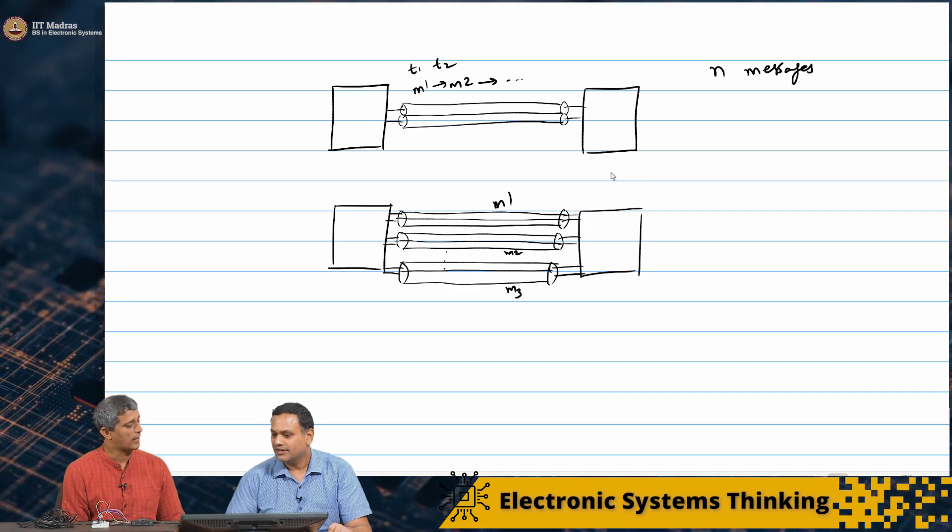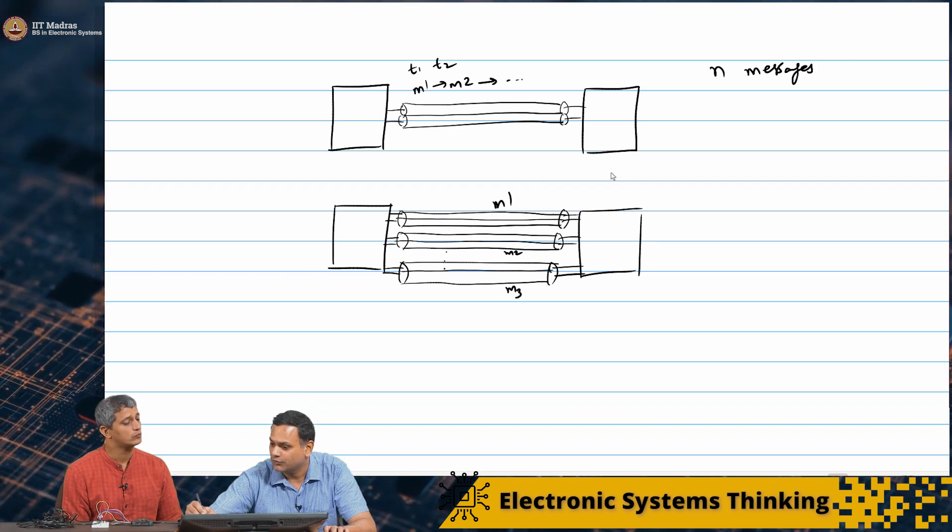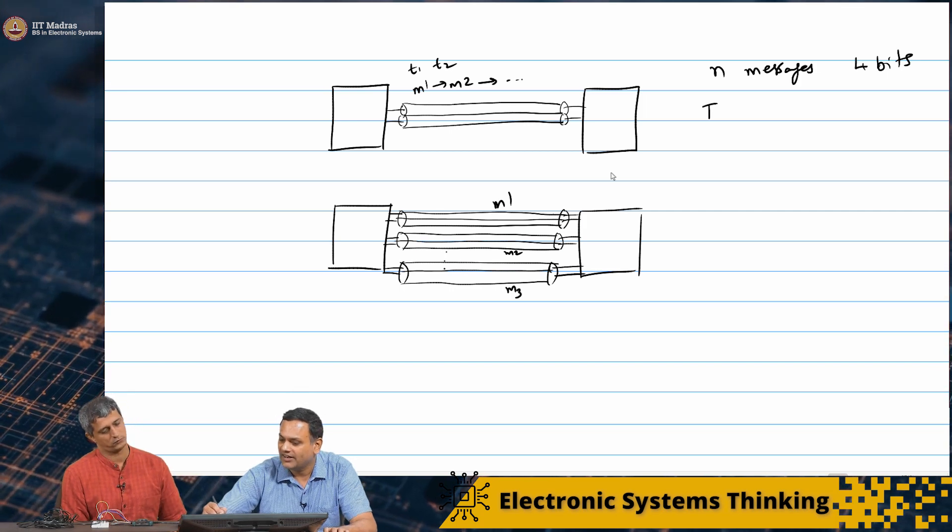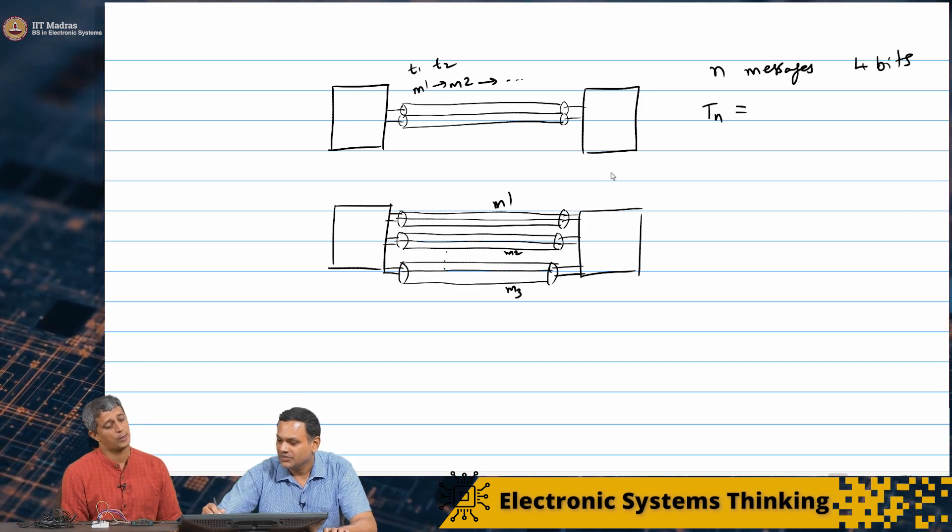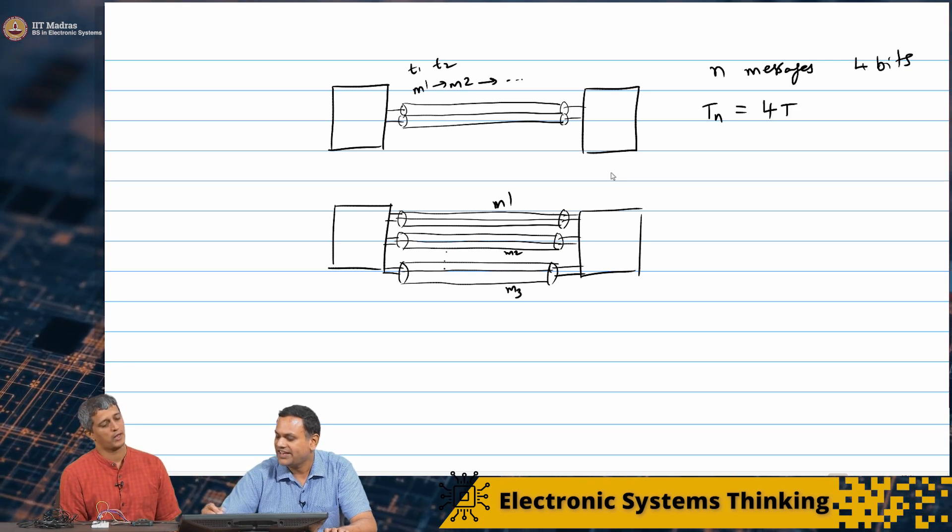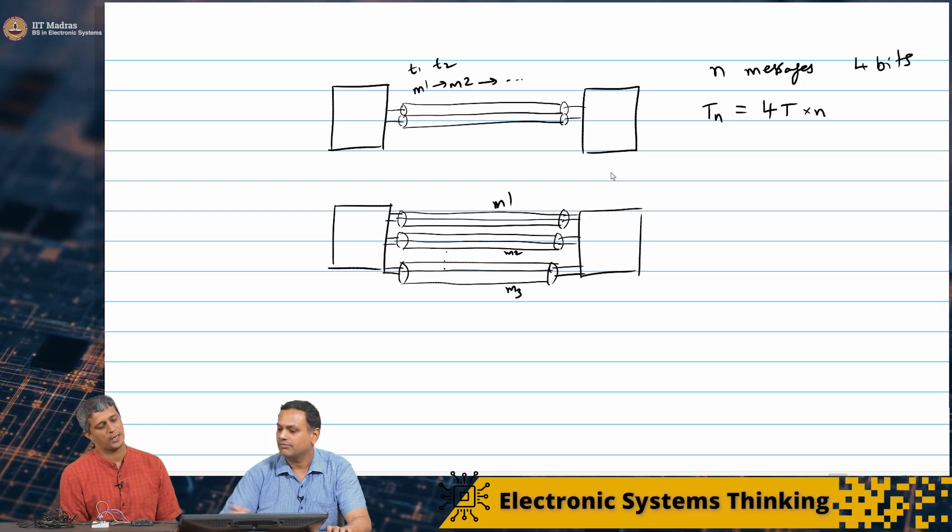Basically we said each is 4 bits. So you will basically need to send the total for n messages is 4 times t which is the time period for 1 bit, times n.